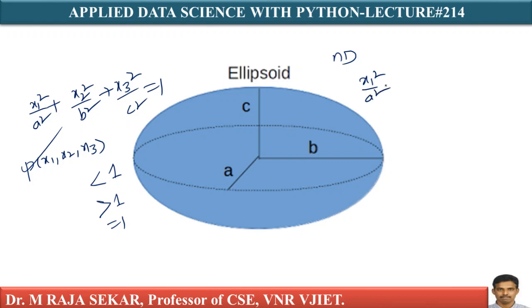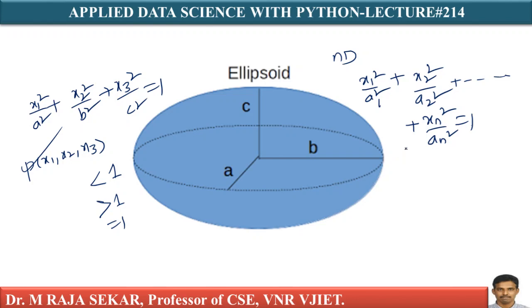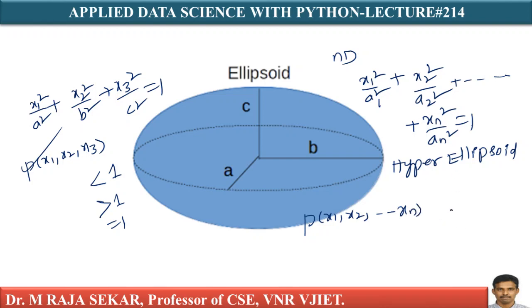Extending to n-dimensional space, the equation is x1 squared over a1 squared plus x2 squared over a2 squared plus ... plus xn squared over an squared equals 1. This is the equation of the hyper-ellipsoid. Similarly, given a point p(x1, x2, ..., xn), if this expression is less than 1 the point is inside the hyper-ellipsoid; if greater than 1 it is outside; if equal to 1 it is on the hyper-ellipsoid.